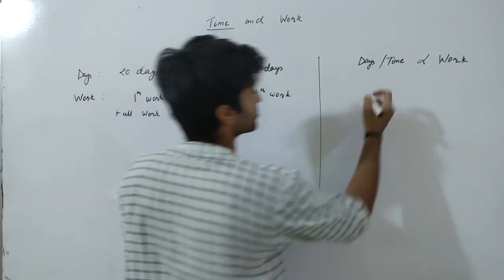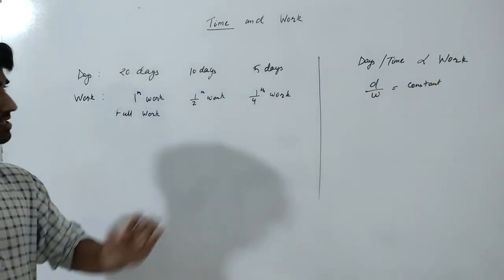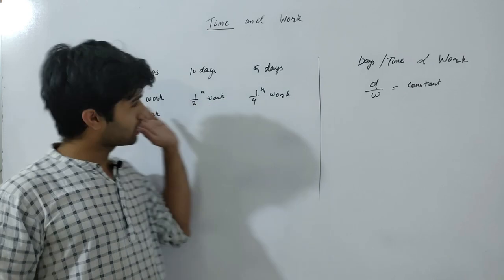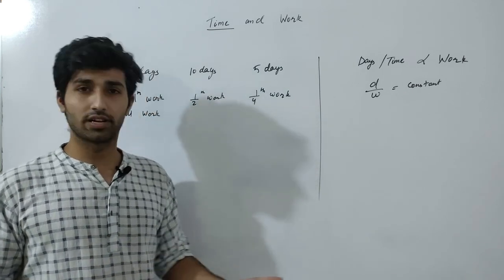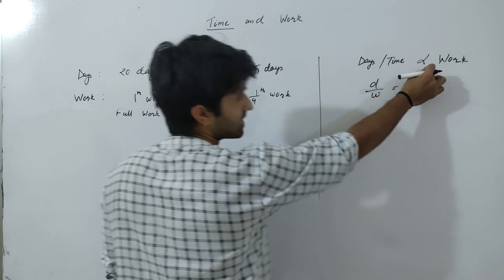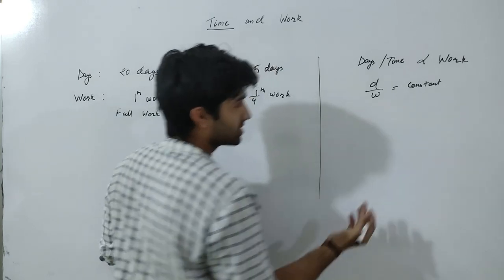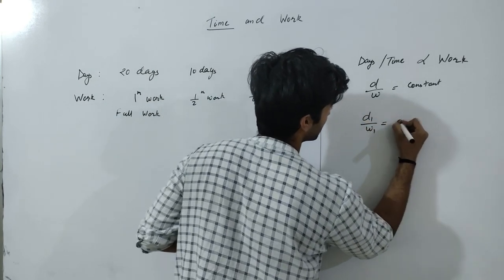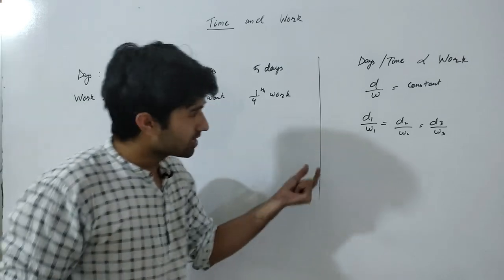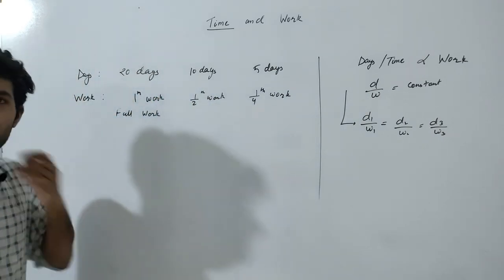I just proved directly proportional to work. So, what mathematical conclusion I can draw is d upon w is equal to constant. This is something from the part of variation. If you are having good variations, you can deal with time and work very fastly. Even your logical way of thinking, if you are good with variation, then you can use this chapter at your own fingers. Okay, but then again, I will be highlighting everything. So, d upon w is equal to constant. You must have seen something like this. You used to write here k, d equals to kw. So, I have just written here constant. Okay, what does this mean? That d1 upon w1 is equal to d2 upon w2 is equal to d3 upon w3. Right or wrong?